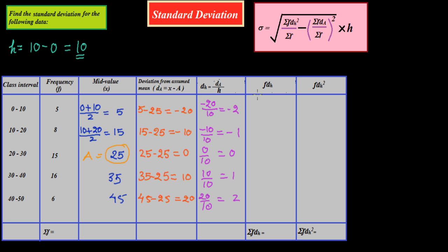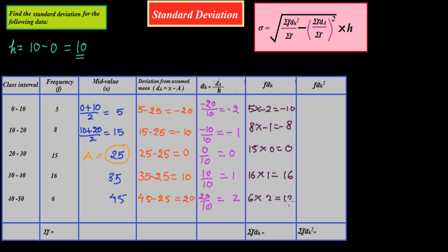Next we find FDH, which is F multiplied by DH. So: 5 × (−2) = −10, 8 × (−1) = −8, 15 × 0 = 0, 16 × 1 = positive 16, and 6 × 2 = positive 12. We have now obtained all FDH values.